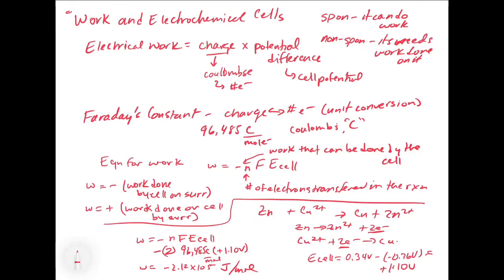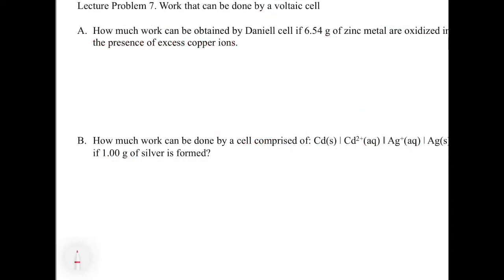Now let's look at practice problems involving stoichiometry. For lecture problem 7, we calculate how much work can be done by the Daniell cell — the copper-zinc case. We already found W = −2.12 × 10⁵ joules per mole. The question asks: if 6.54 grams of zinc metal are oxidized in the presence of excess copper ions, how much work can be done by the cell?